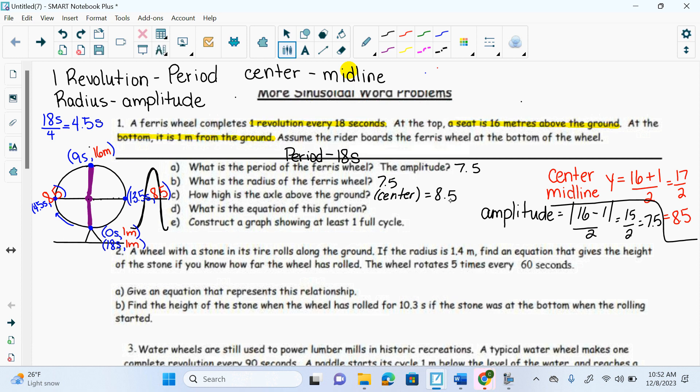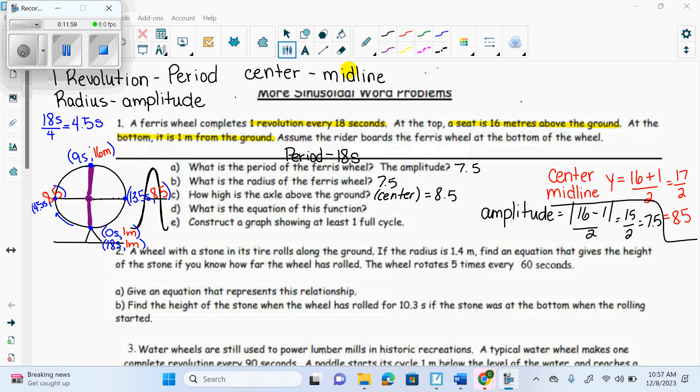What is the equation of this function? I have five coordinates. What can I do? Stat. Edit. Put it into my list. Find some other regression. So, the equation I got was y equals 7.5 sine 0.3496585, 0, 4, x, minus 1.57, plus 8.5. Does it make sense? We have 7.5 at the front, which is my amplitude, 8.5 at the back, which is my midline. It should make sense, correct?